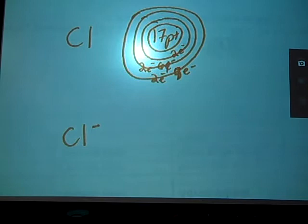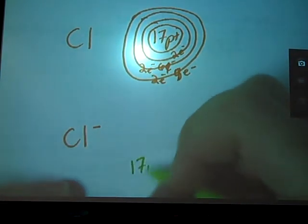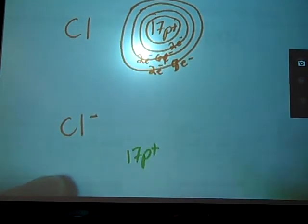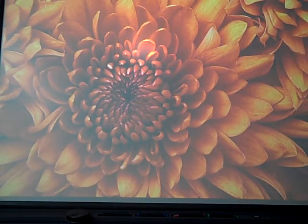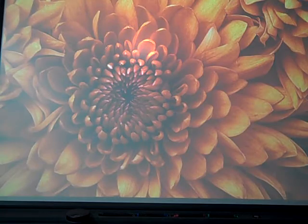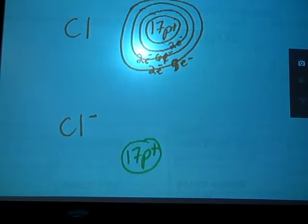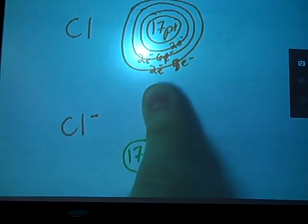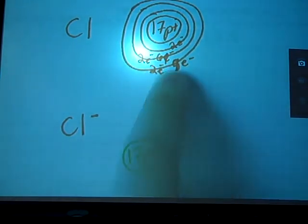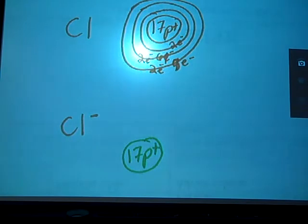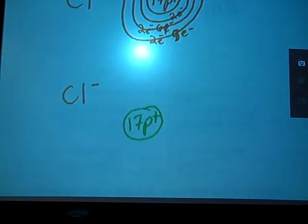For my ion, let me use green this time. I still have a 17 proton nucleus. That has not changed. I still have a 17 proton nucleus. I still only have three rings. That much has not changed. But I'm adding an additional electron to this outermost ring. Where once there was seven, now there are eight electrons on that outermost ring. Means there are more electrons, more negativeness to repel against each other.